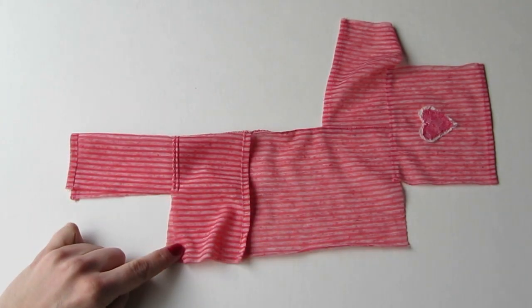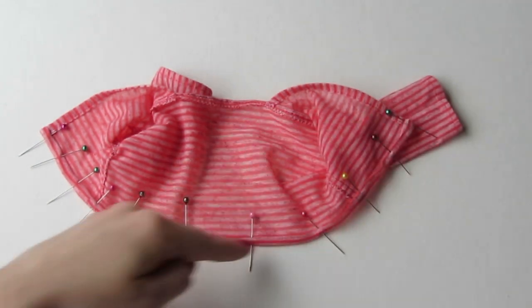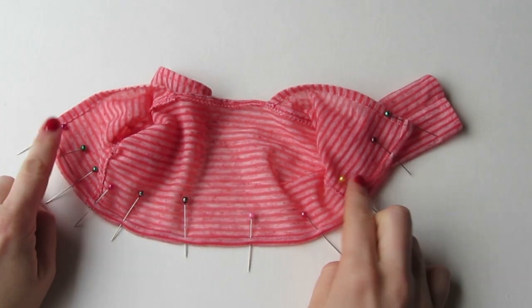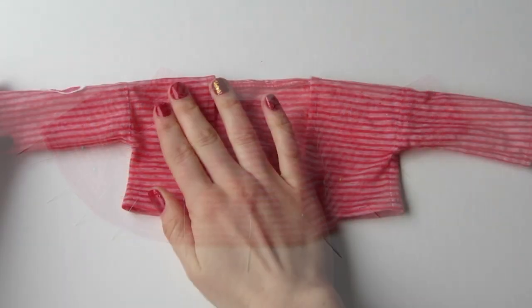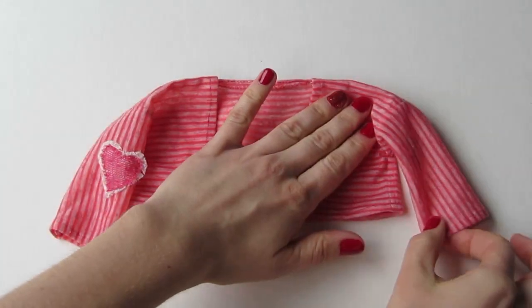Hem the lower edge by pressing it up a quarter inch twice and then top stitching it. And that's it! Thanks for following along today guys, and I hope you have fun with this.